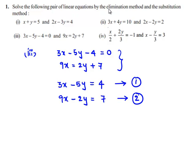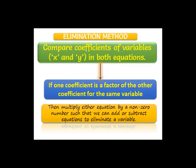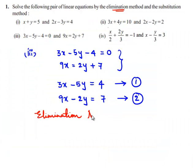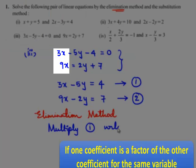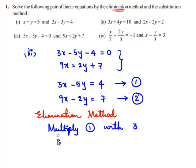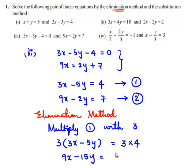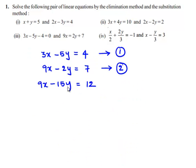First, let us solve the given pair of equations by the elimination method. Multiply equation 1 by 3: 3 times of 3x minus 5y is equal to 3 times of 4. That gives 9x minus 15y is equal to 12. Let this be equation number 3.